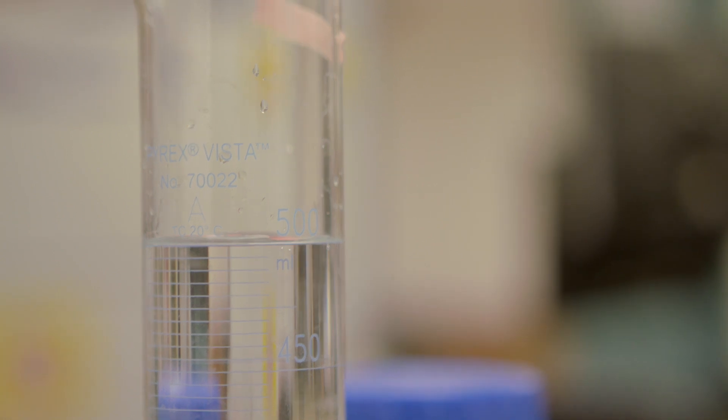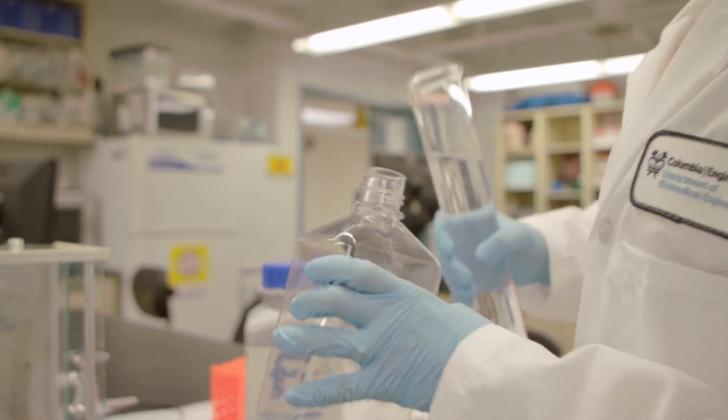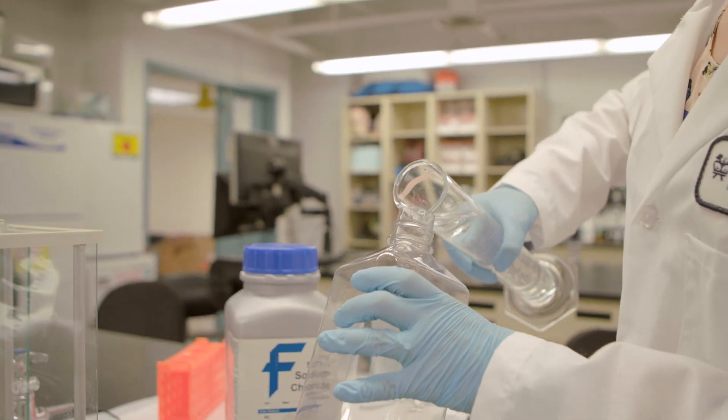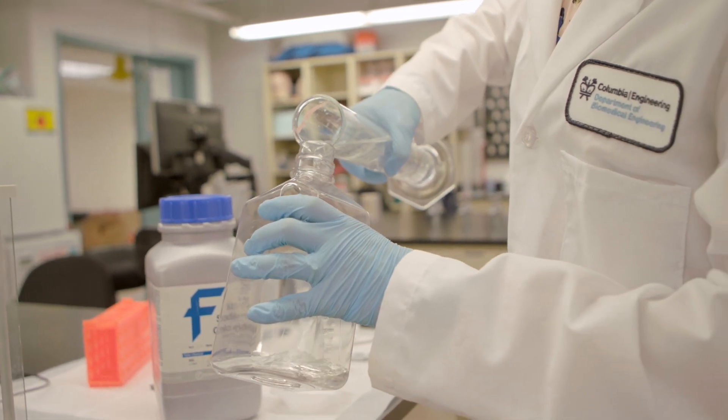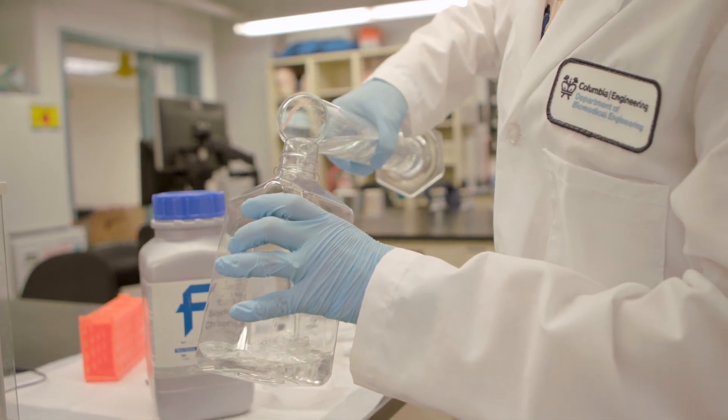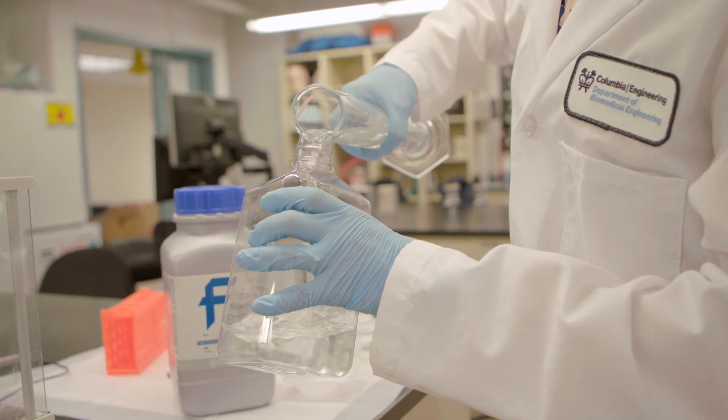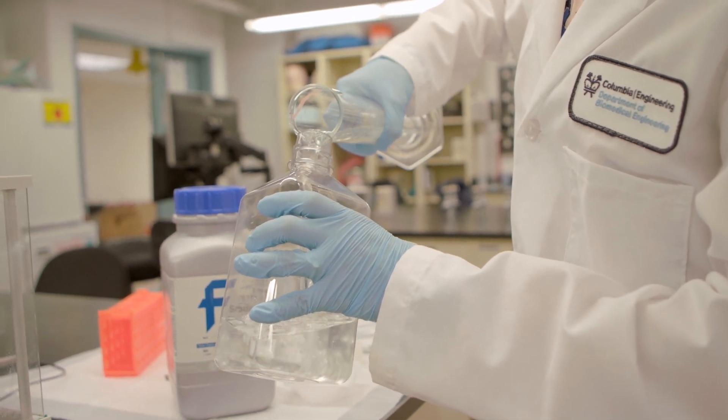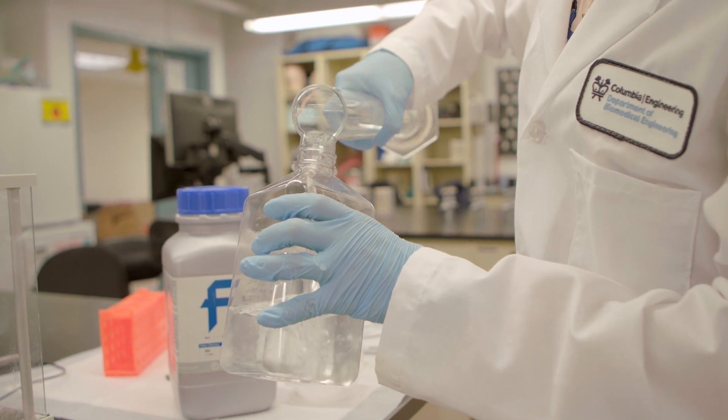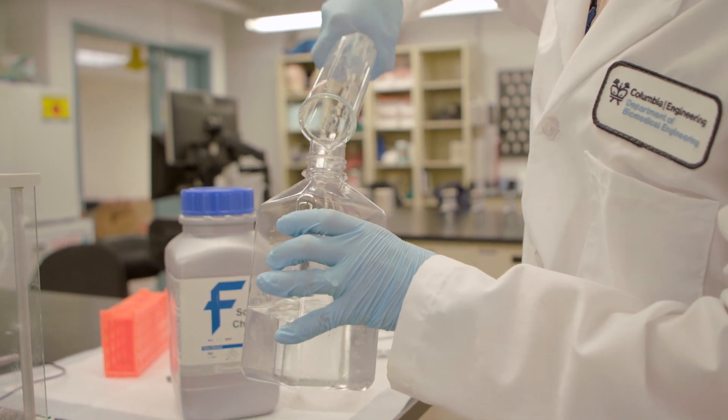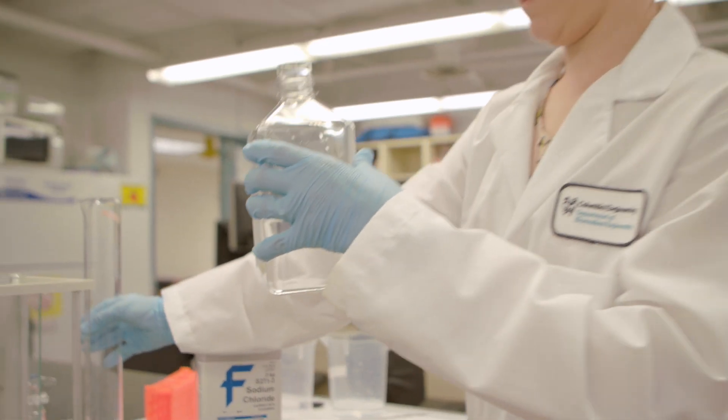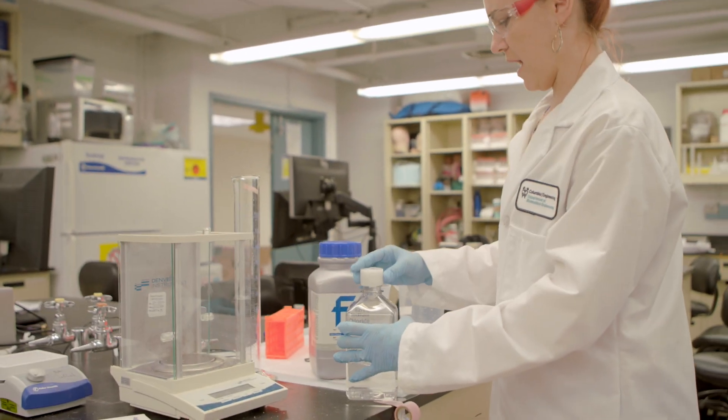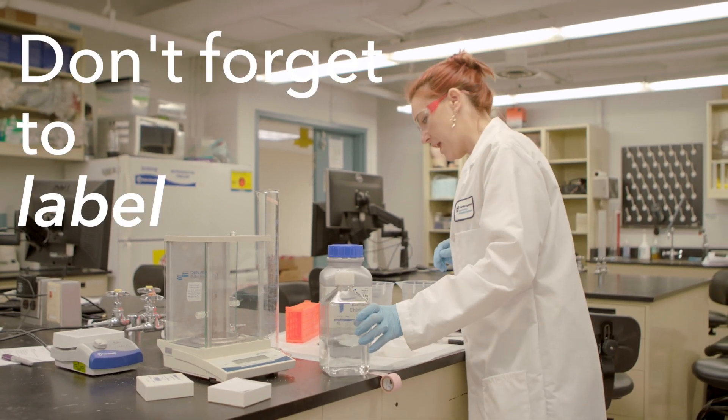So now I have 500 mils of my 10x solution. I can pour it into my storage jar. The trick with these graduated cylinders is to pour slow so you don't overflow and spill as you're pouring. Put that lid on.